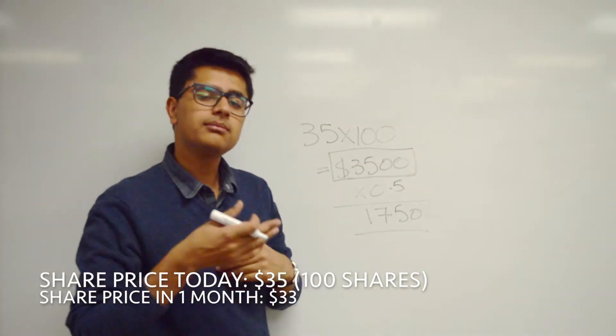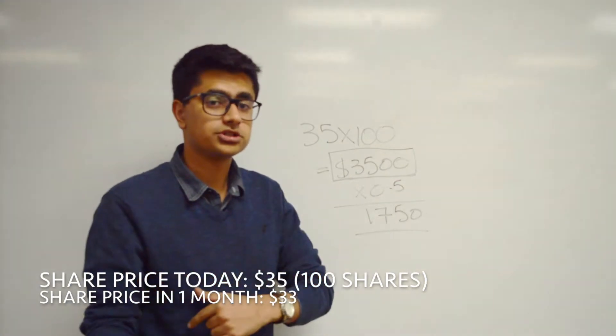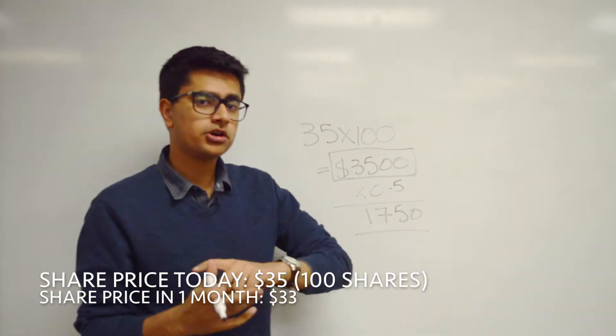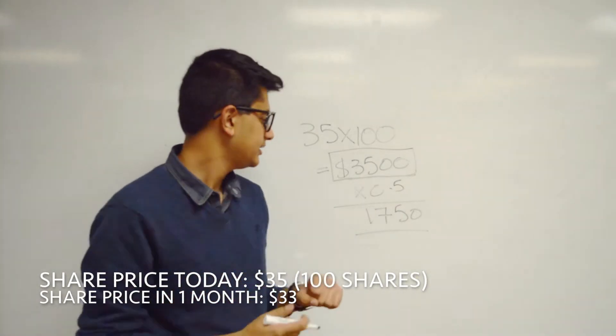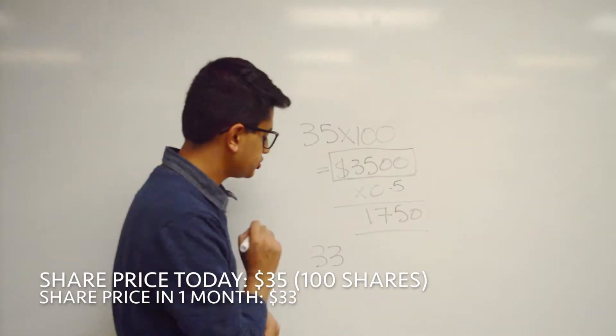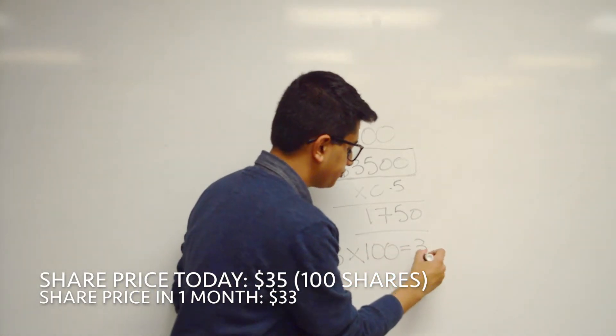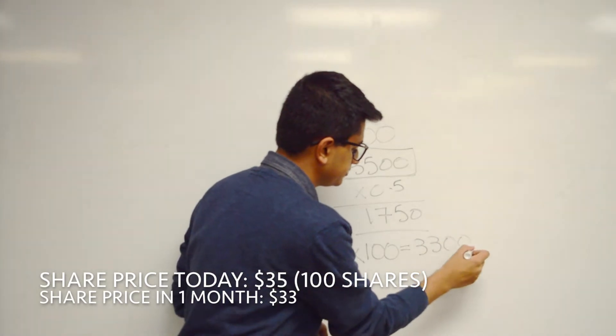But now, one month passes and the stock price has actually fallen to $33 a share. Now the broker is actually going to buy those stocks back. Well, the stocks are now, one month from now, they're going to be $33 a share times 100 equals $3,300.